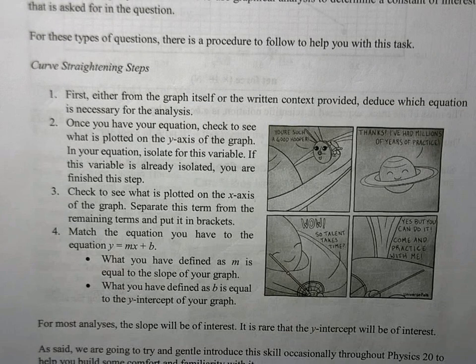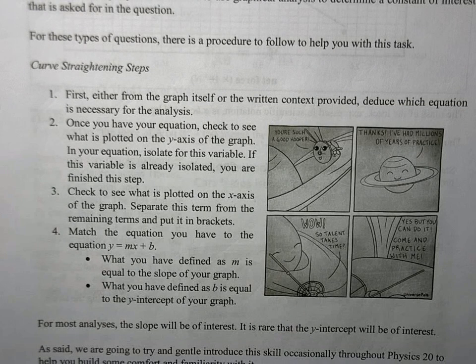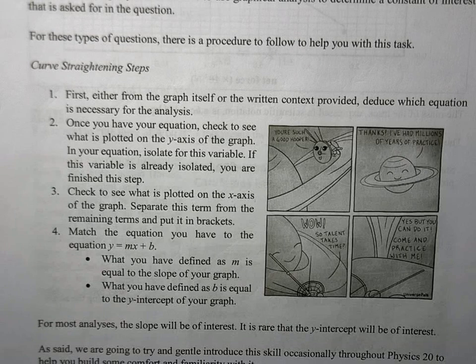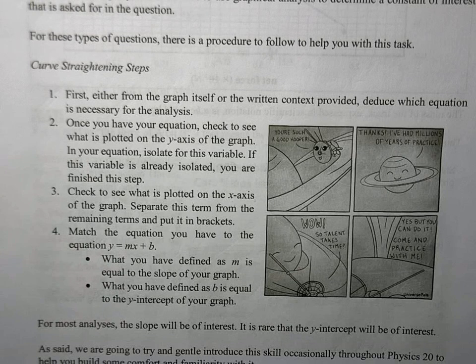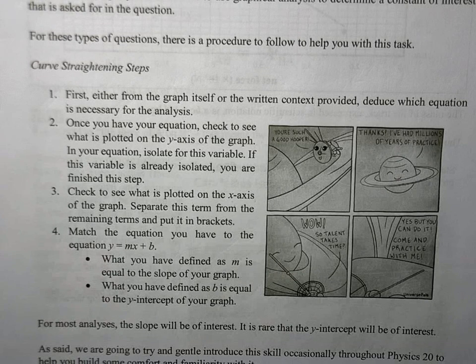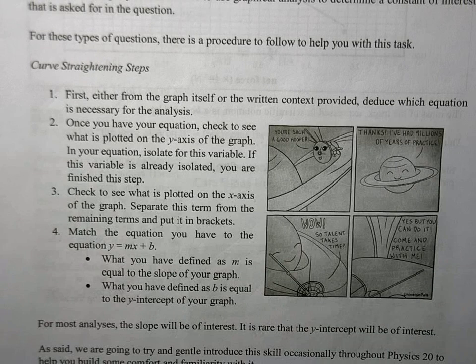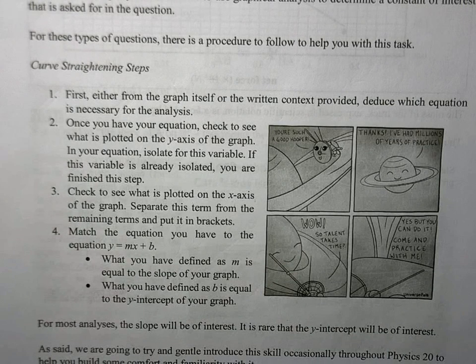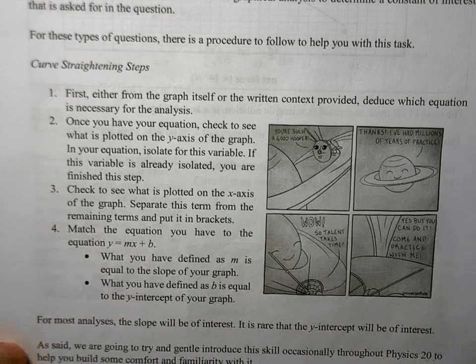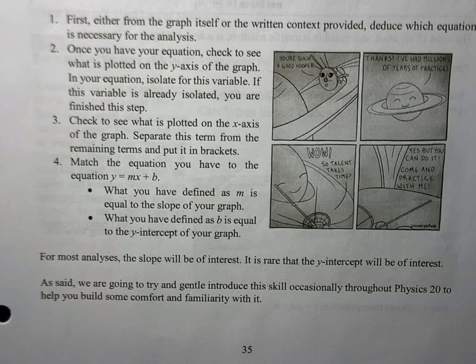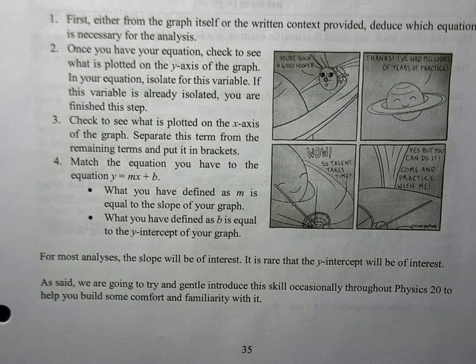Once you isolate for the y variable, you want to take what's on your x-axis of the graph and take that variable in your equation. You want to separate that out from everything else, and you're going to put the remaining terms in brackets. What you should hopefully be able to do is match this to the form y equals mx plus b.